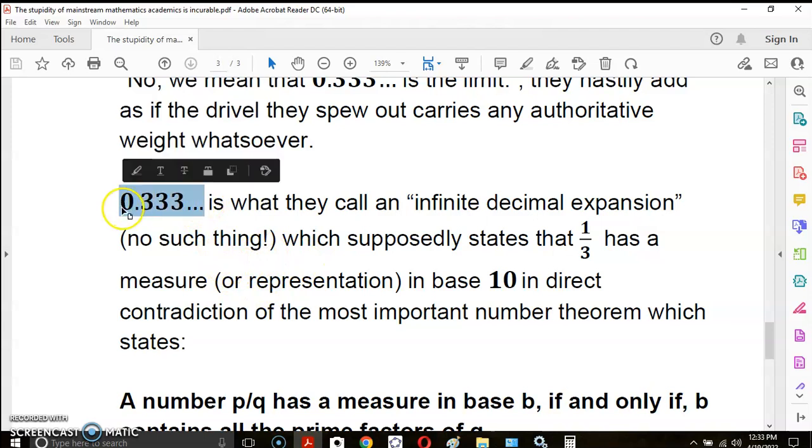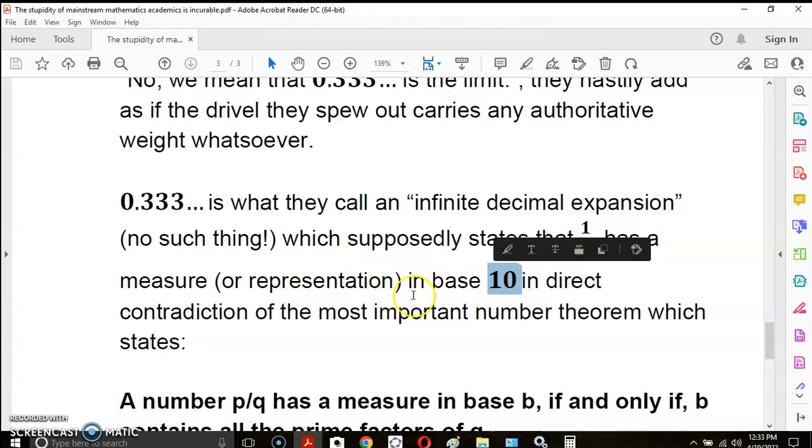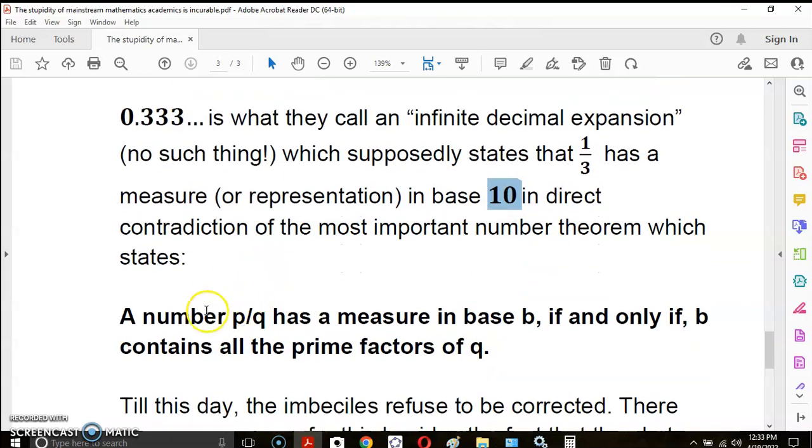Now 0.333 dot dot dot is what they call an infinite decimal expansion. And of course, there is no such thing, which supposedly states that 1/3 has a measure or a representation in base 10. Now, this is in direct contradiction of the most important number theorem, which states, and it follows, a number p over q has a measure in base b if and only if b contains all the prime factors of q.